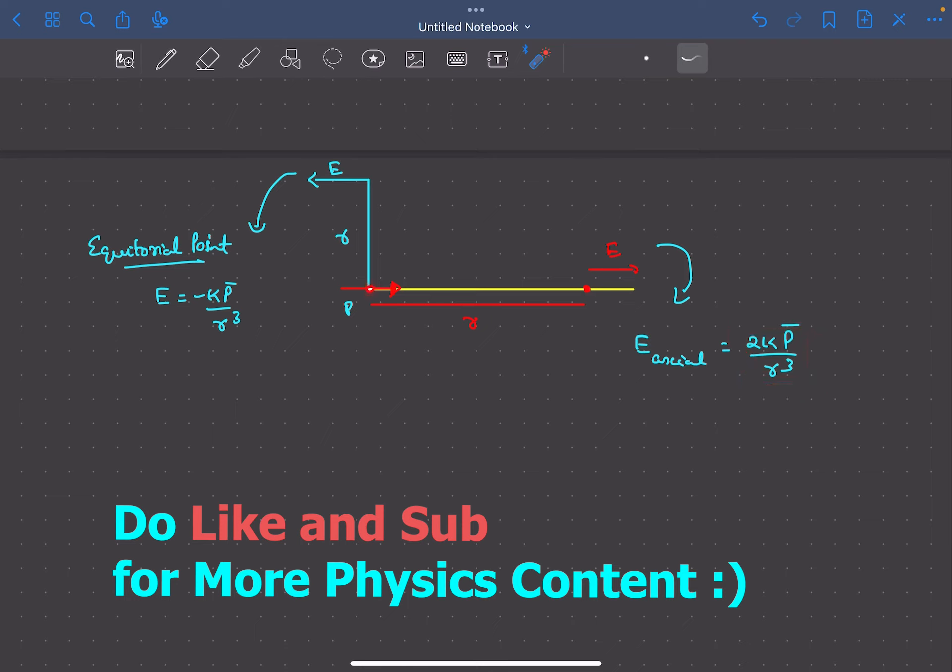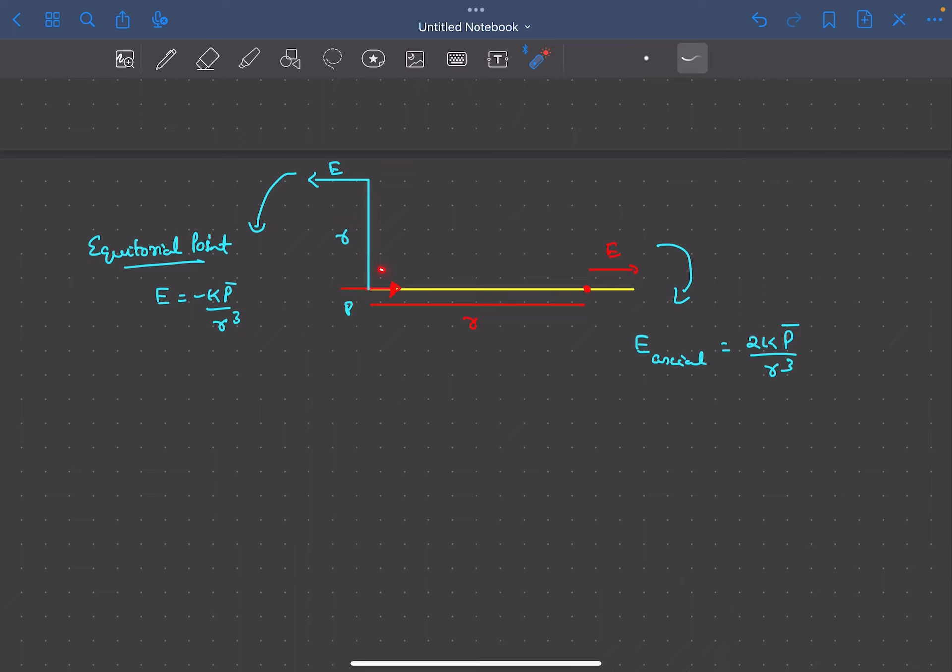The electric field due to the dipole at an equatorial point at a distance R from the dipole is -kp/R³. The minus sign indicates that the electric field is opposite to the dipole moment.